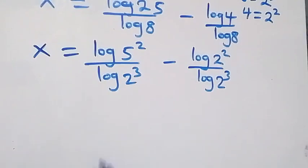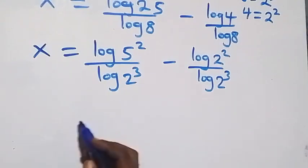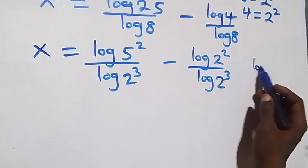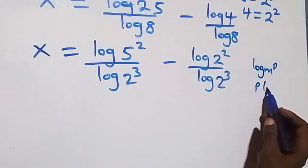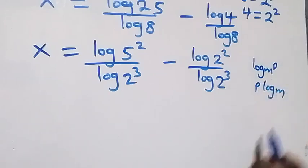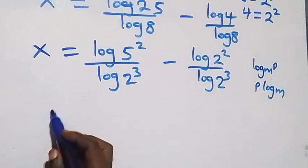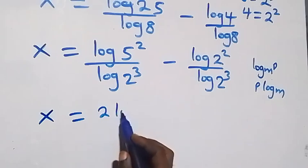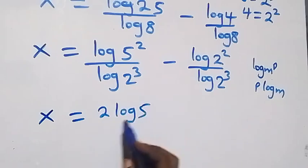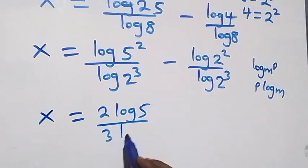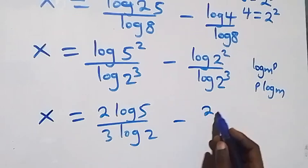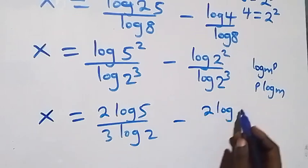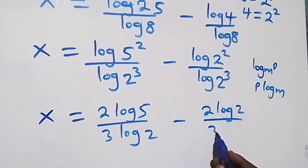Applying the power law of logarithms again — log m raised to power p equals p log m — what we have becomes x equals 2 log 5 over 3 log 2, minus 2 log 2 over 3 log 2.